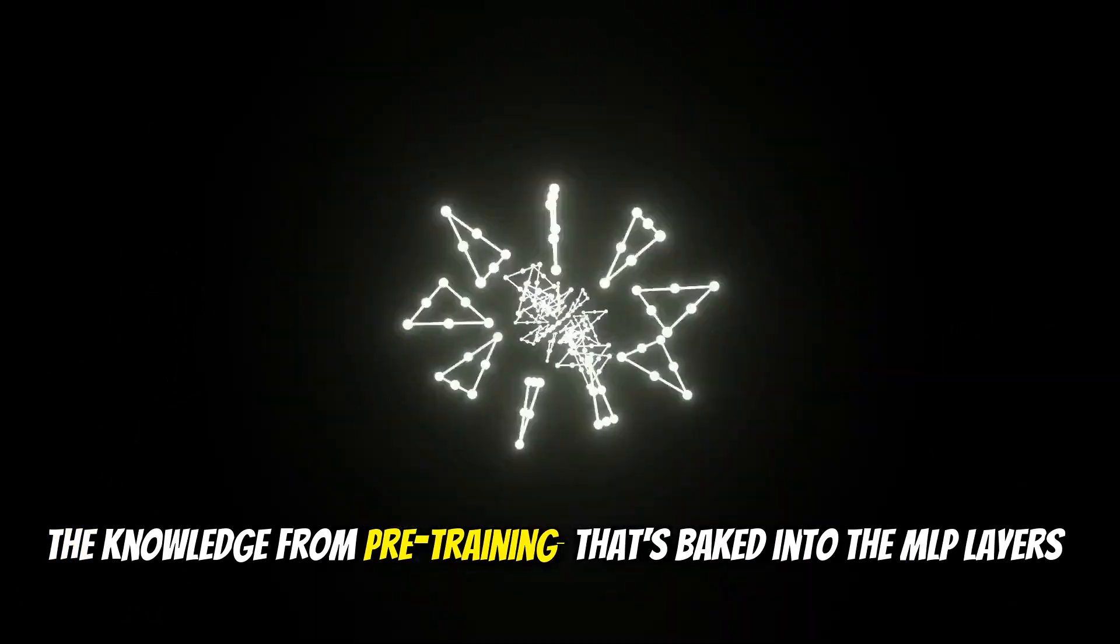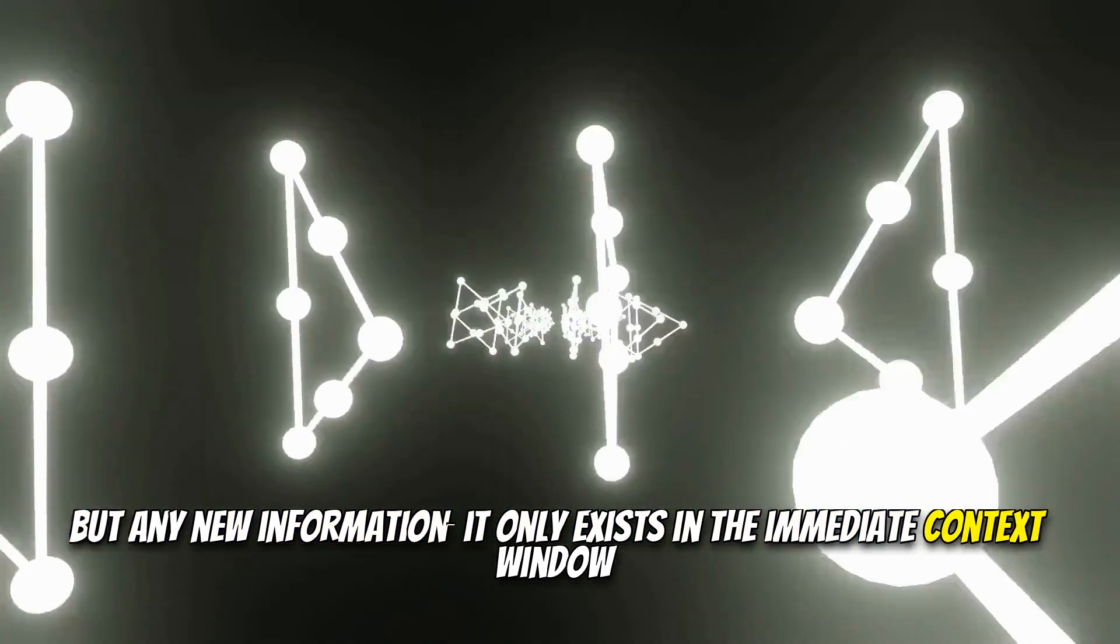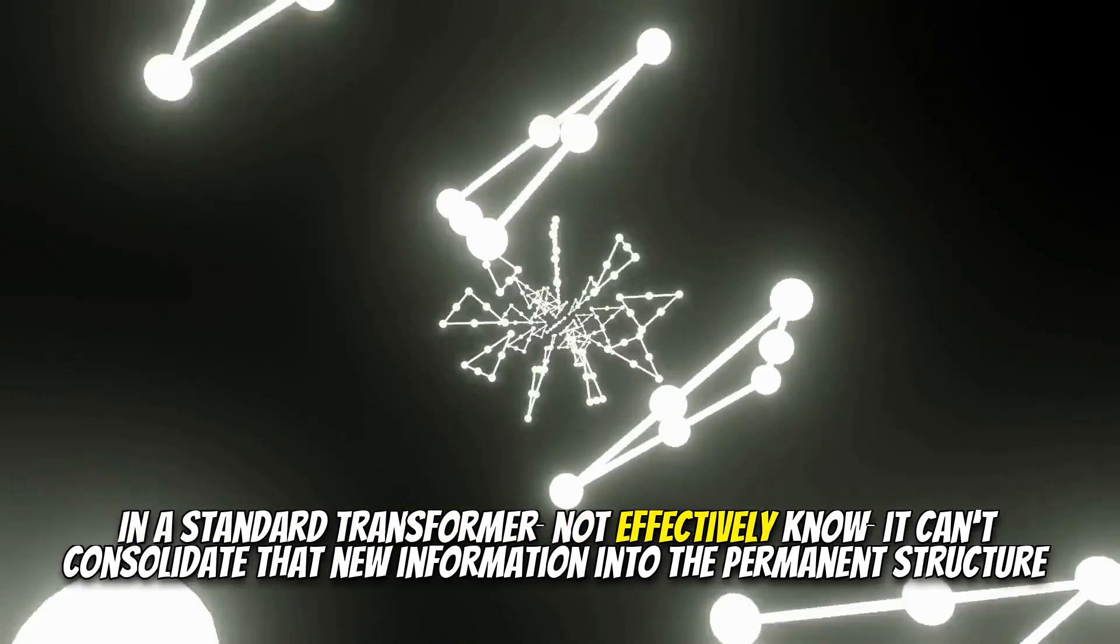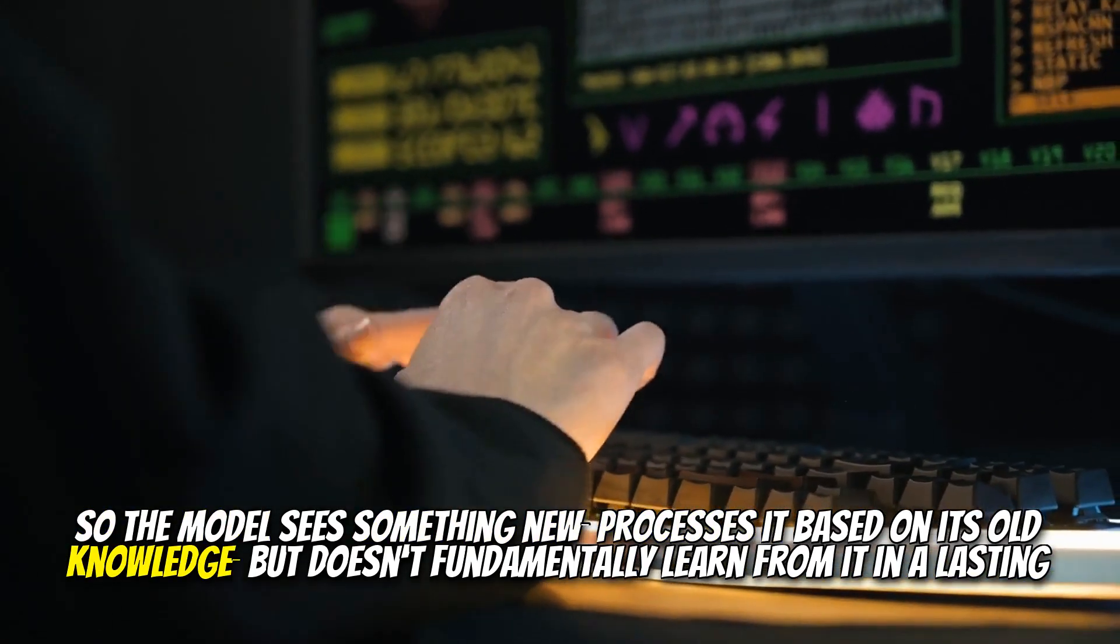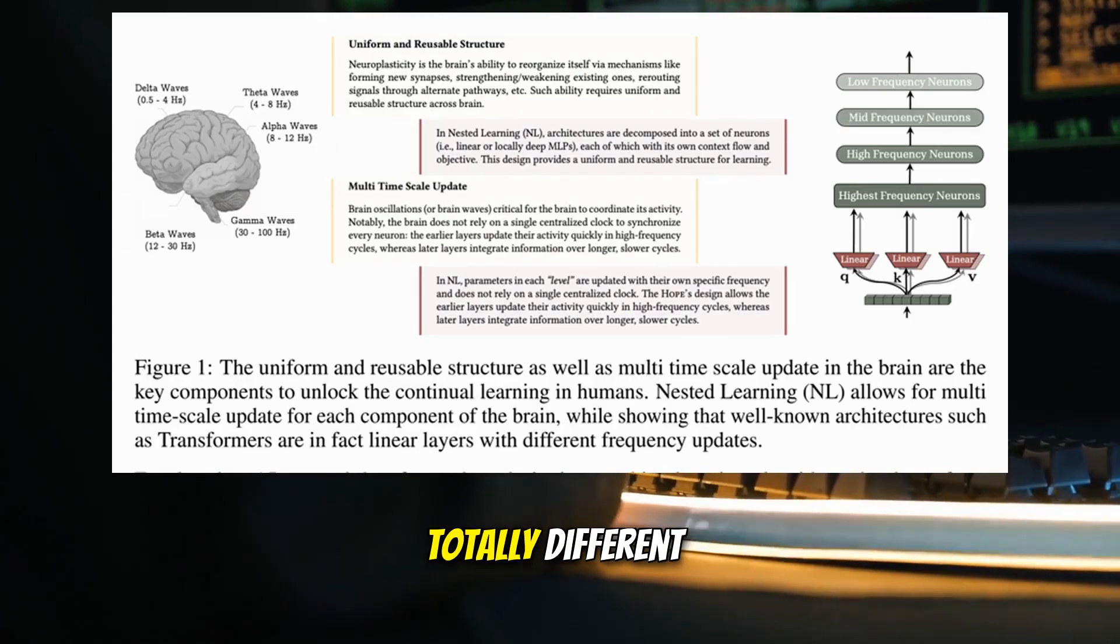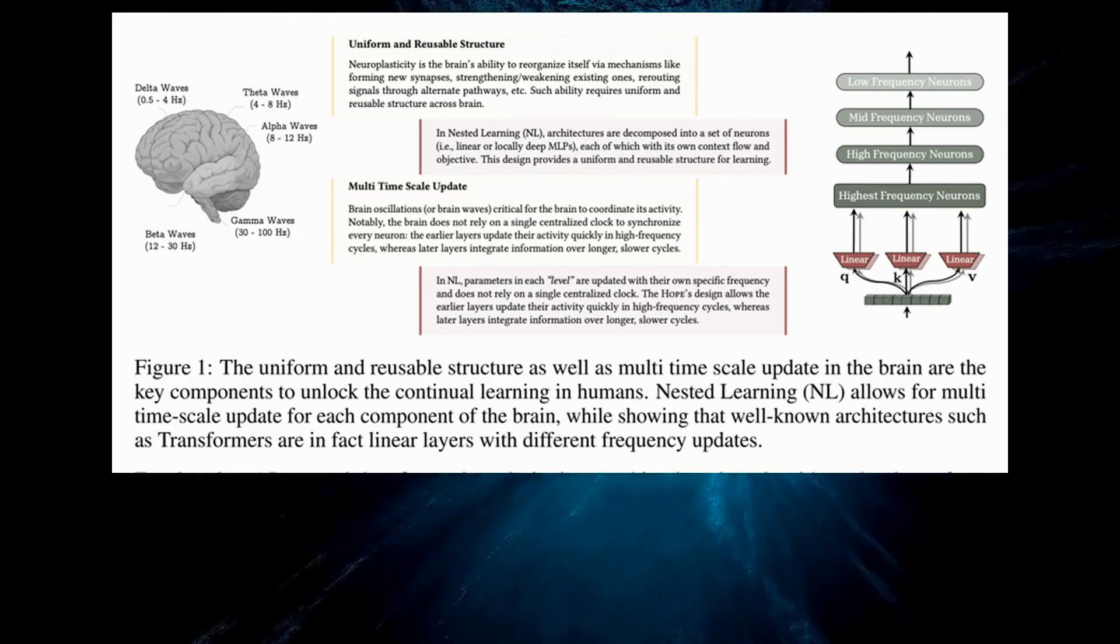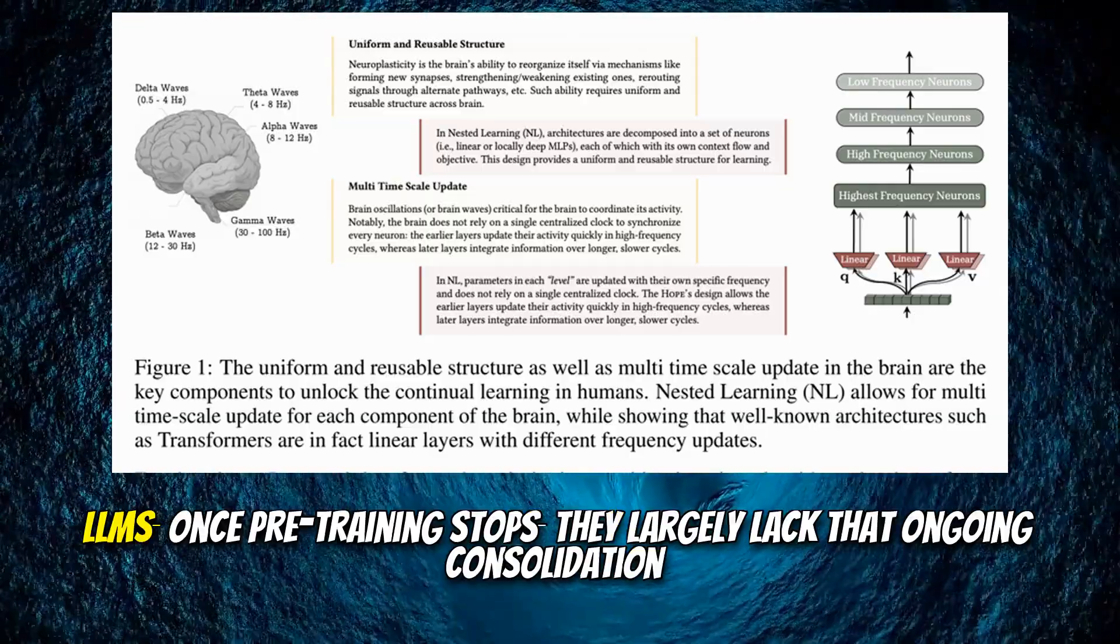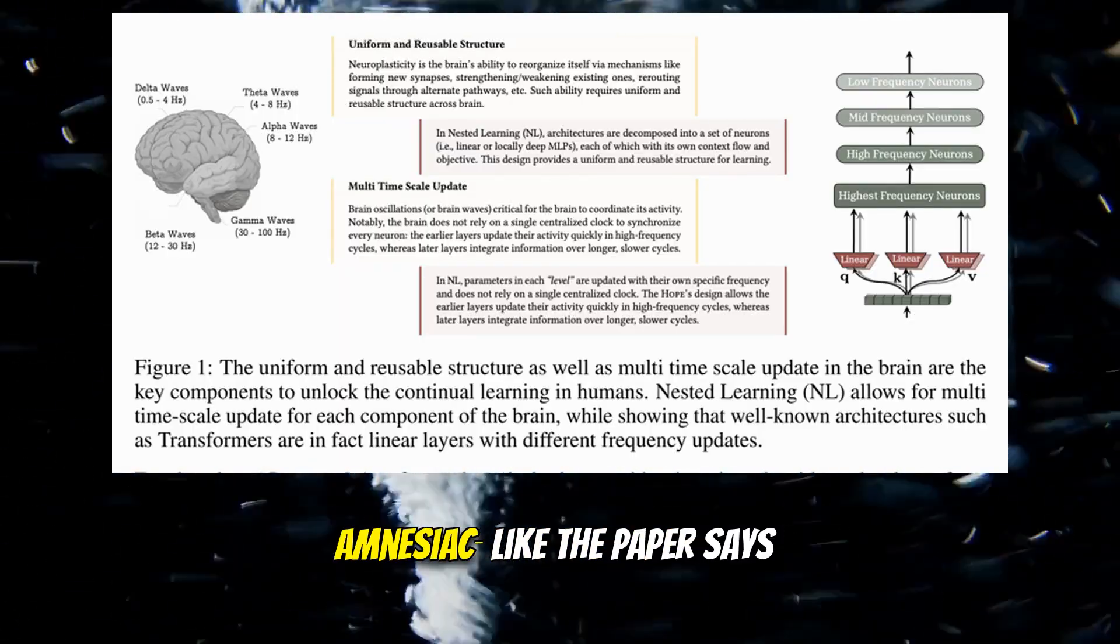Right. And the authors use this really vivid analogy. They compare a typical pre-trained LLM to someone with anterograde amnesia. Whoa, amnesia. That's strong. You mean like they can't form new long-term memories after they've been trained? Pretty much, yeah. The knowledge from pre-training, that's baked into the MLP layers. That's the long-term store. But any new information, it only exists in the immediate context window. It's short-term. And crucially, that short-term context info doesn't really update the long-term weights. In a standard transformer, not effectively, no. It can't consolidate that new information into the permanent structure. So the model sees something new, processes it based on its old knowledge, but doesn't fundamentally learn from it in a lasting way. Which is obviously very different from how, say, your human brain learns.